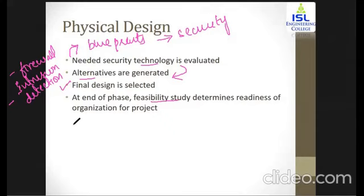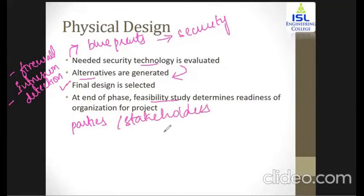In this physical design phase, there are different stakeholders or parties involved within the organization. Each of them has their own role so that they can approve the development of the particular project. Everyone has a vote to confirm that they agree to go ahead and implement this particular project.